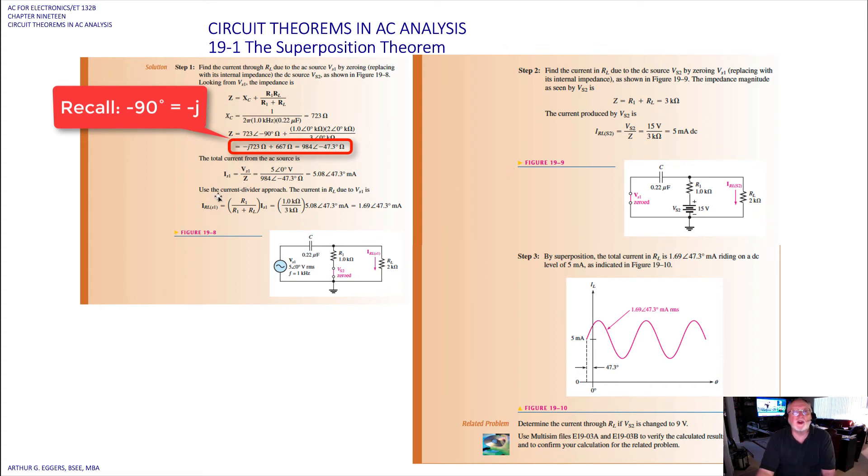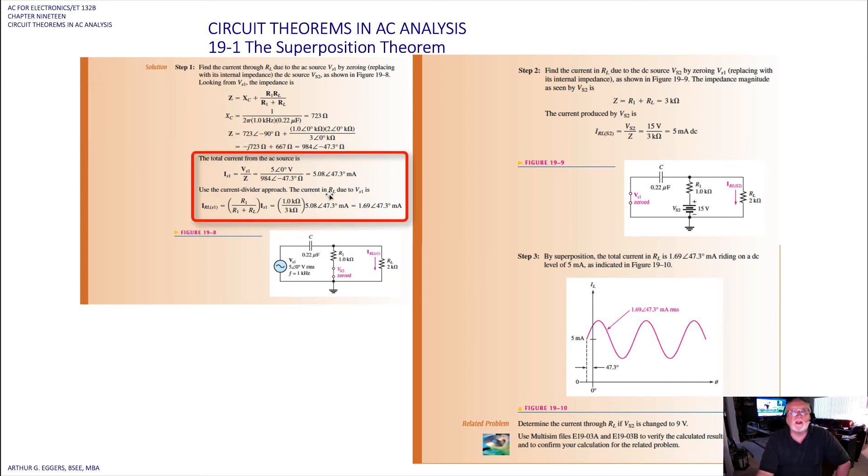Next, we use the current divider. The current in the load R sub L due to the source Vs1, so the current through RL source 1, is the current divider. So we have 1k ohm divided by 3k ohms times 5.08 at an angle of 47.3 degree milliamps. So that's our product then of those two terms. We end up then with 1.69 at an angle of 47.3 degrees milliamps. So there's our schematic diagram for that operation.